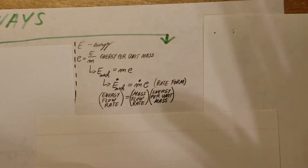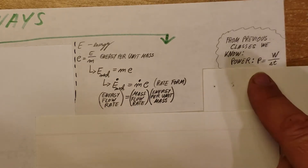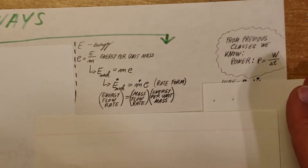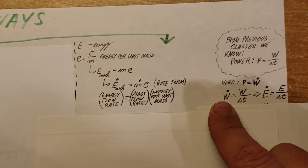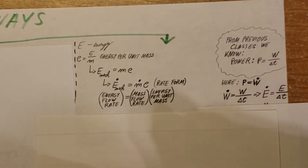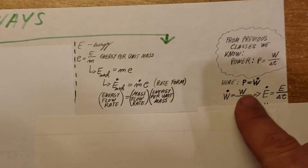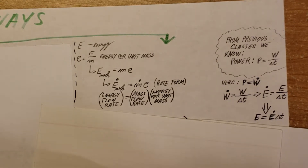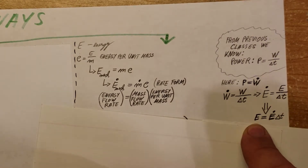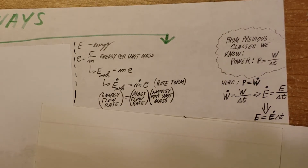Since they are asking for power and total energy generation, we remember that power is work over time. In this class we write Ẇ instead of P because P we use for pressure. So the time rate of work is Ẇ equals work over time. Work is energy, so we can write this as energy over time equals energy over delta t. Ė is basically our power, E is the total energy generated at the site, and delta t is the time given.